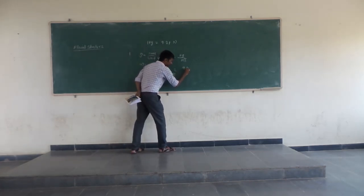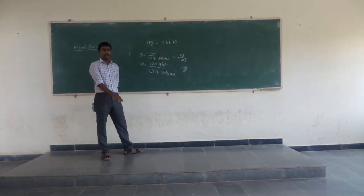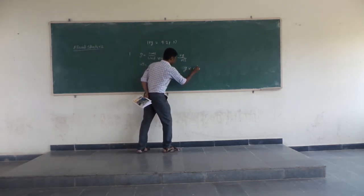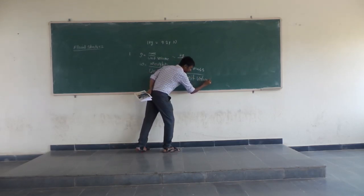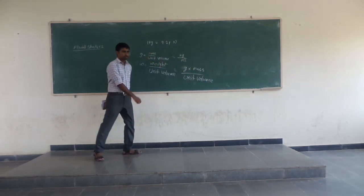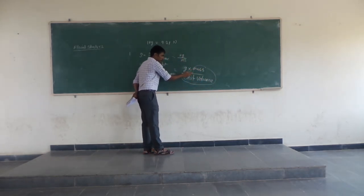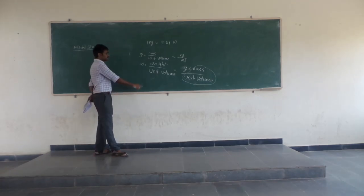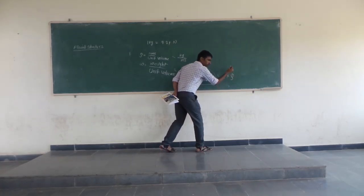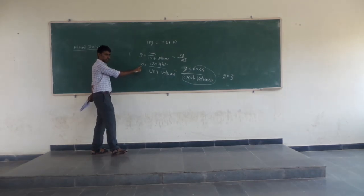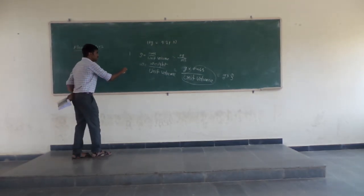So weight density W equals 9.81 — that is g, acceleration due to gravity — multiplied by mass of fluid divided by unit volume. Mass divided by unit volume is mass density rho. So weight density W is equal to g multiplied by rho. This is the second property.